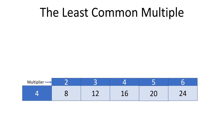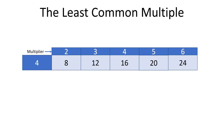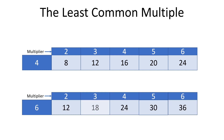Let's list multiples of 4 and 6. The multiples of 4 are 8, 12, 16, 20, and 24. And for 6, we have 12, 18, 24, 30, and 36. If we look closer, we notice that 12 and 24 appear as multiples both for 4 and for 6. So 12 and 24 are common multiples for 4 and 6.